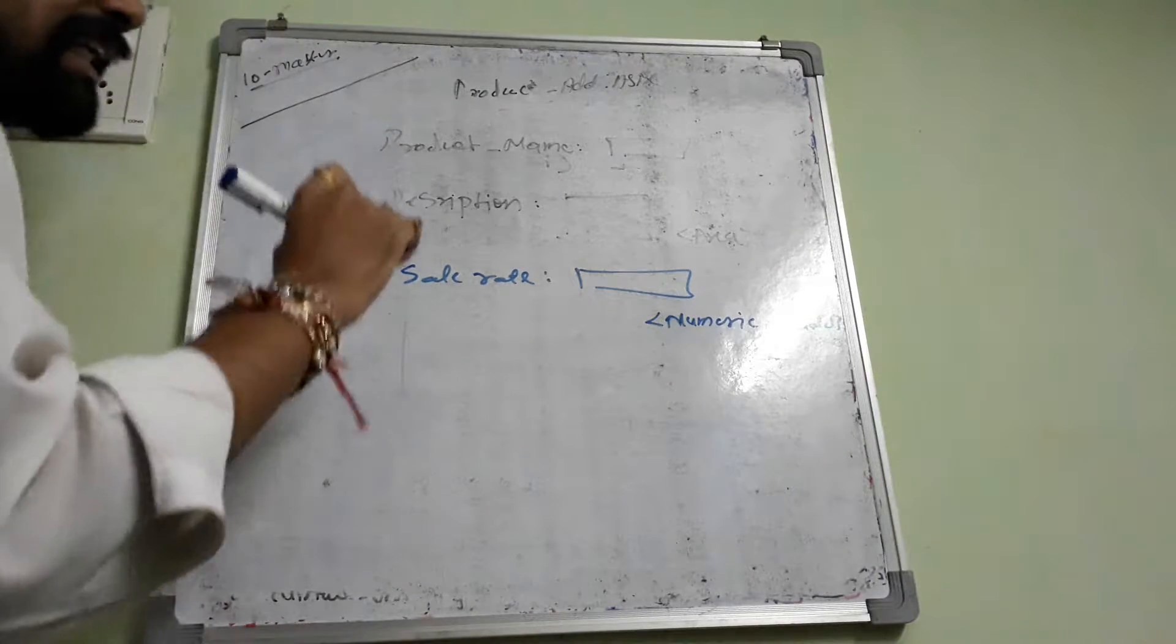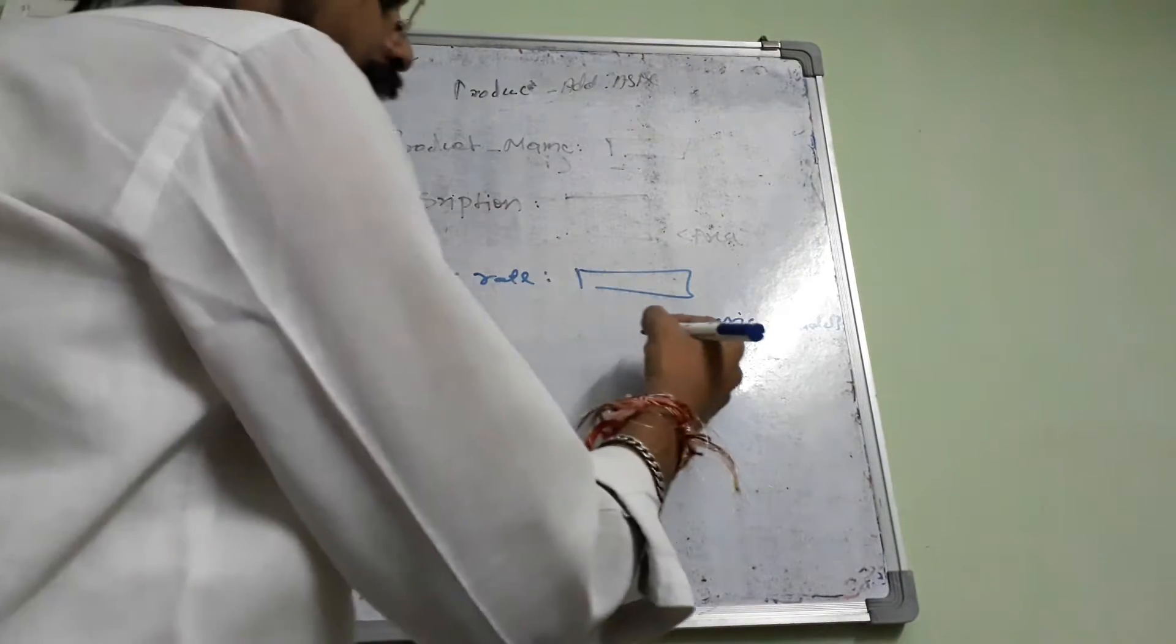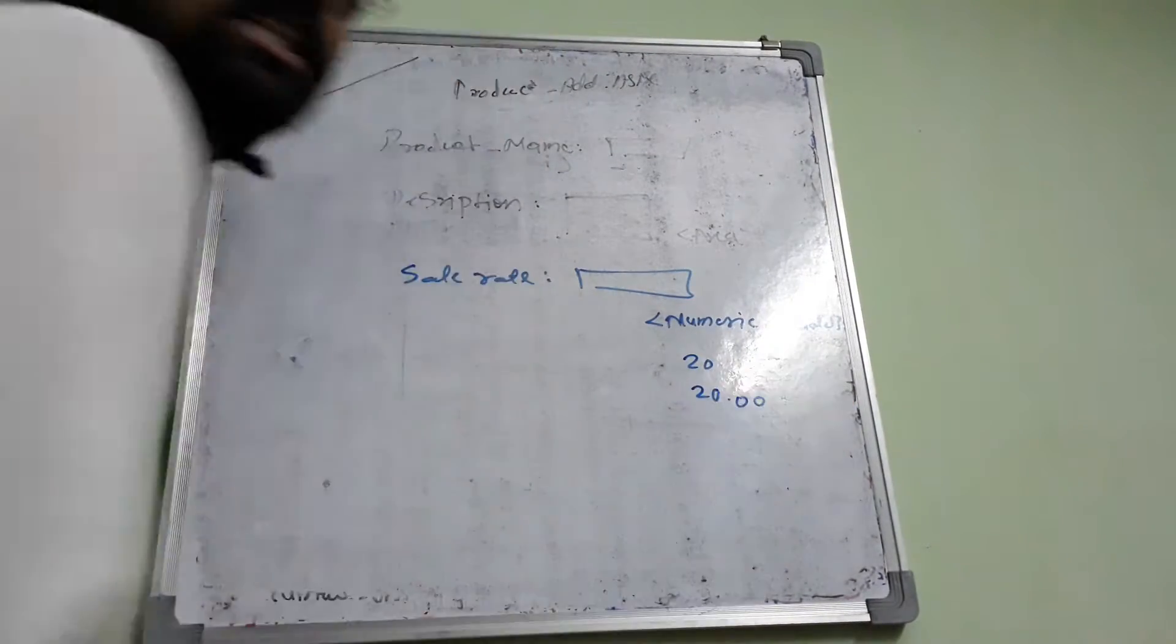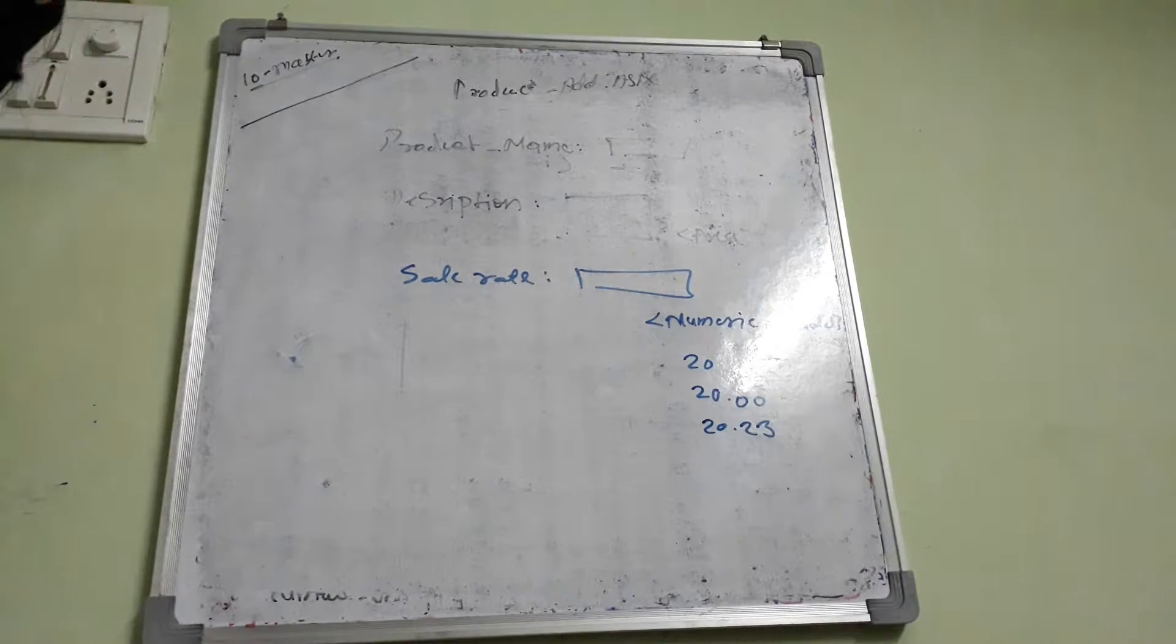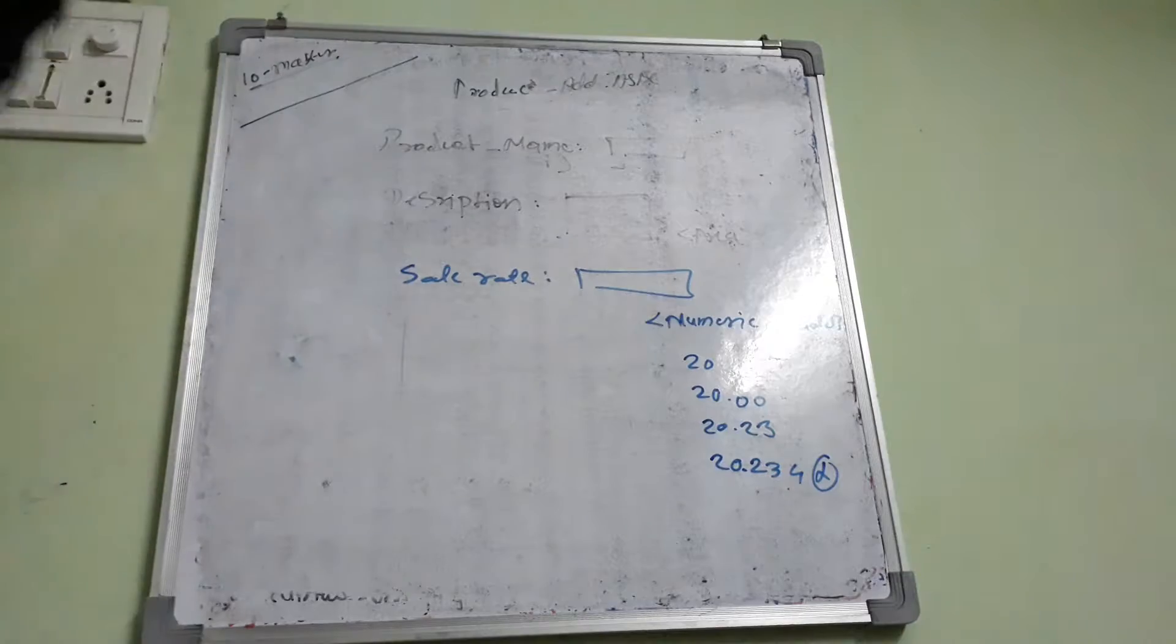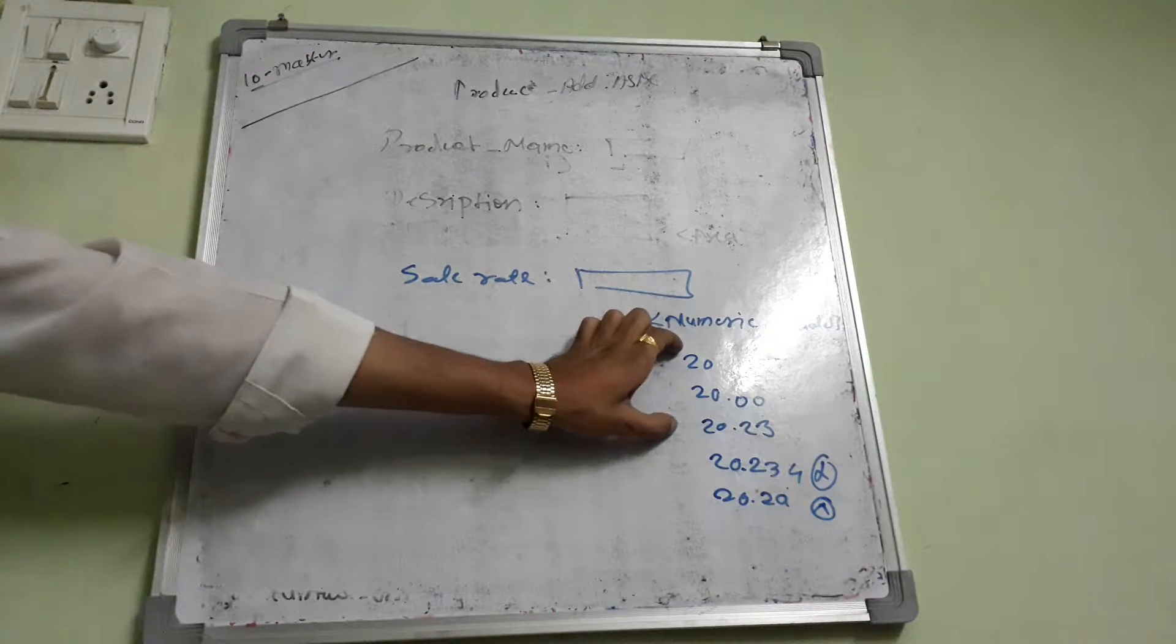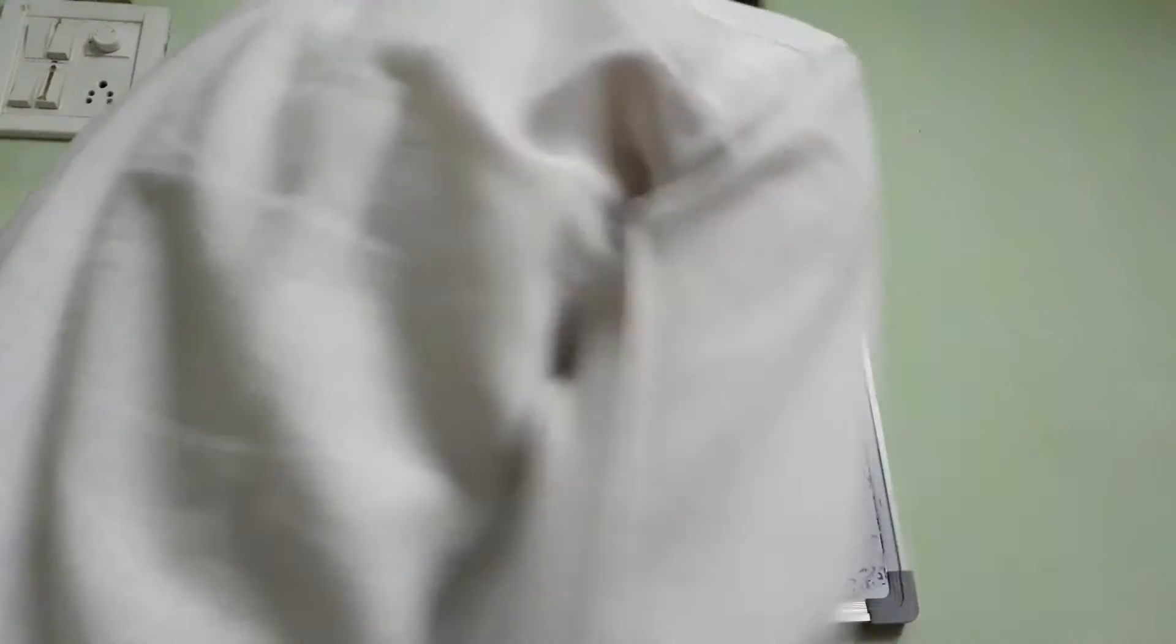We have to select the numeric validator as well, but after dot accept two integers. So I'll give you an example: we accept some value, we accept 20.8 value, we accept 20.2.3 value. In this format accept sell rate.